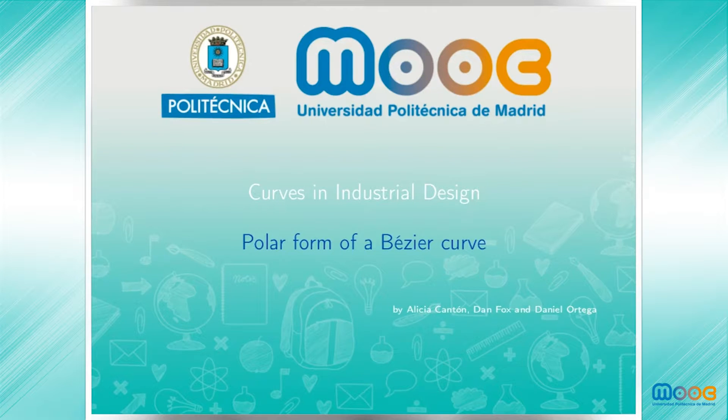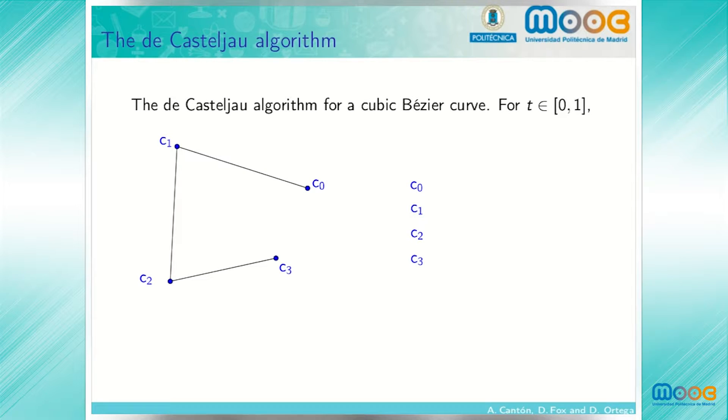Curves in industrial design, the polar form of a Bezier curve. We recall the de Casteljau algorithm for a cubic Bezier curve. We start with four control points, c sub 0, c sub 1, c sub 2, c sub 3, and the three segments which join successive control points.